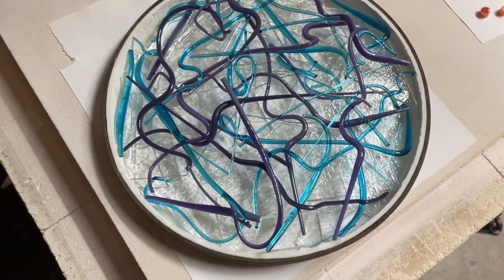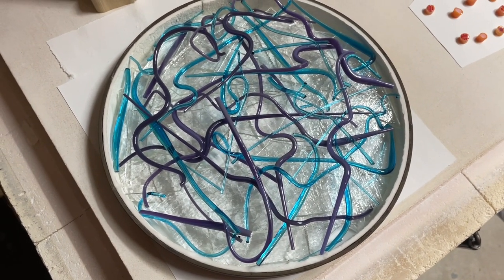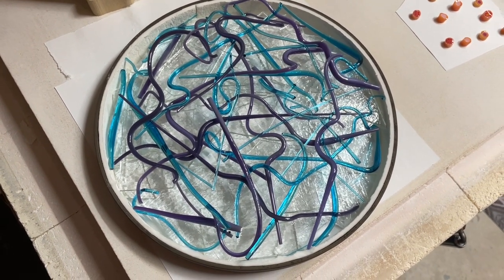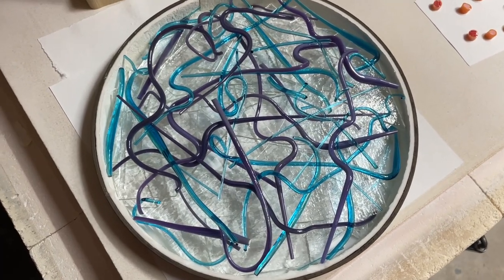We'll do a full fuse and just see what it looks like. This could become a drop vase at some point. This could be a bowl or a platter or get chopped up and turned into something else. We'll just see what it looks like when it comes out.